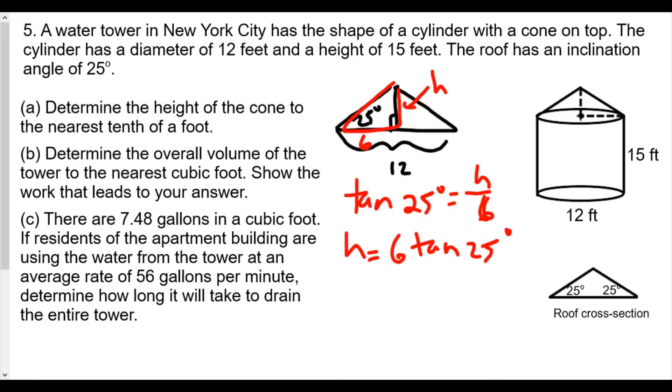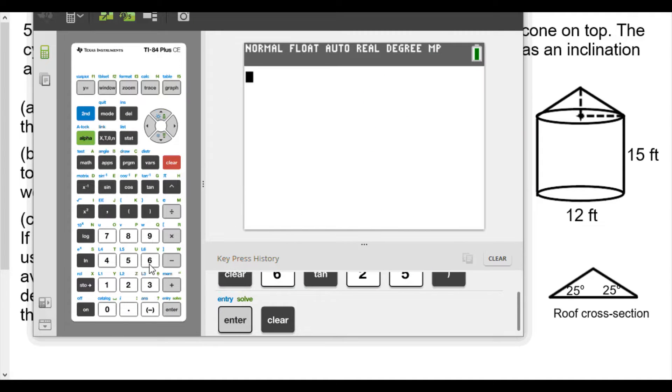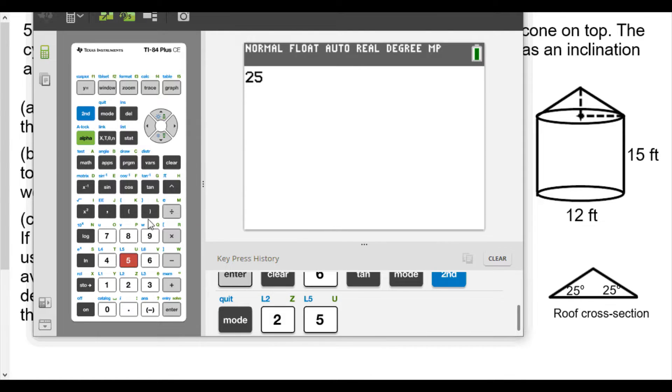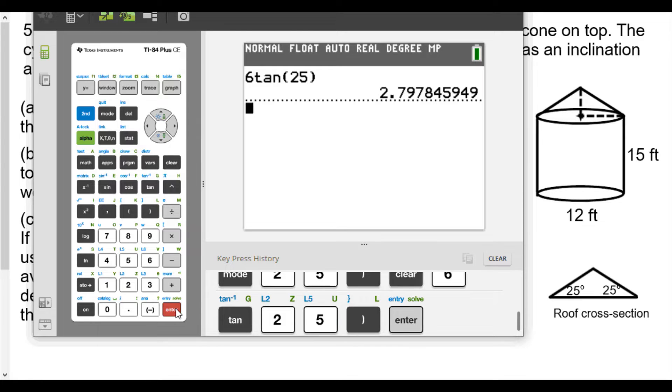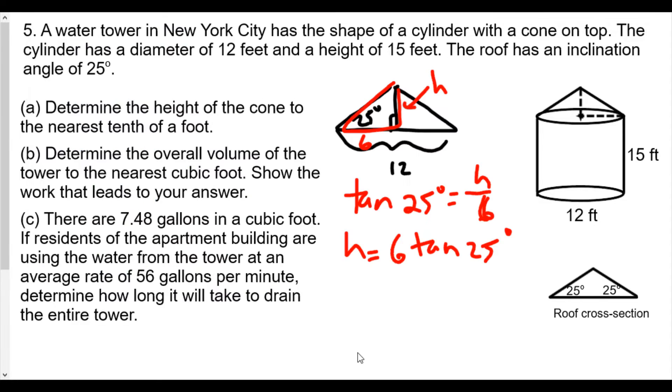From here we're going to figure out the height of the cone to the nearest tenth of a foot, so we'll bring our calculator. We'll do 6 times tangent of 25 degrees. Make sure you're in degree mode. We're going to get 2.797845949, which will approximate to the nearest tenth: 2.8 feet.